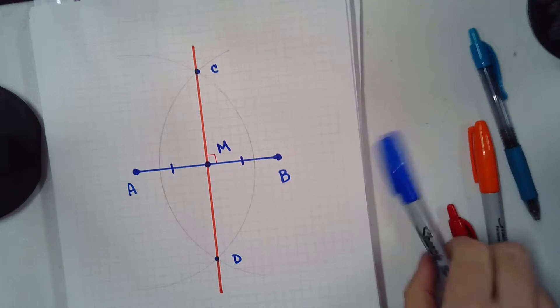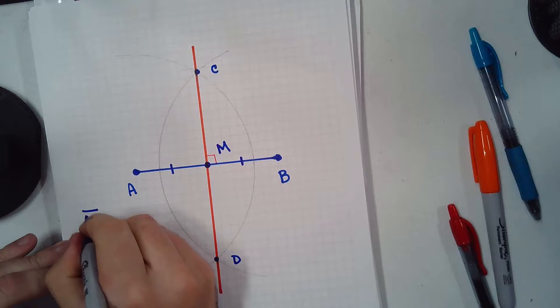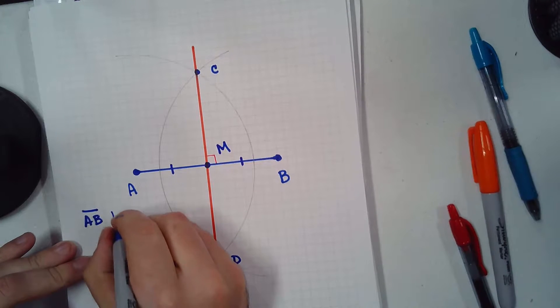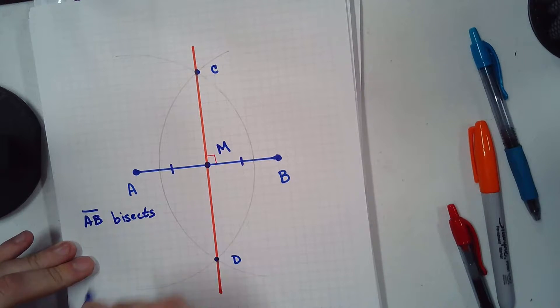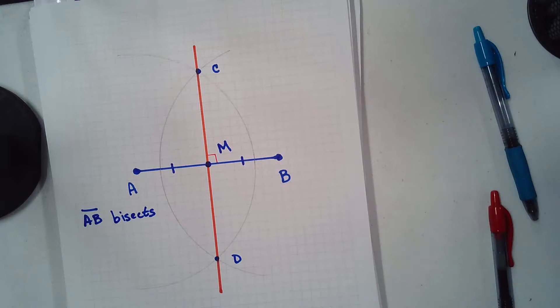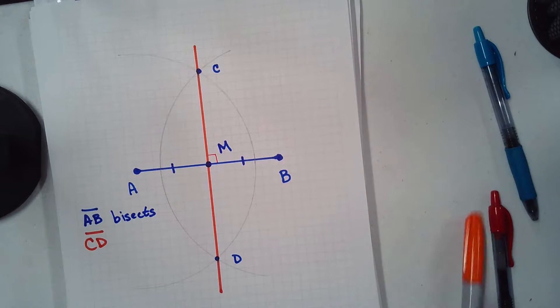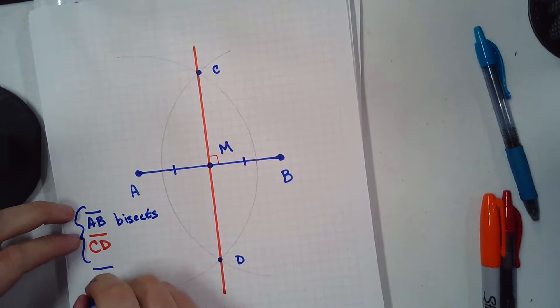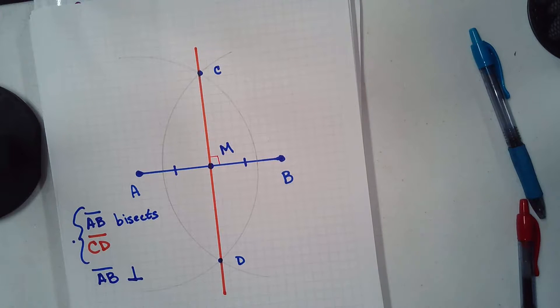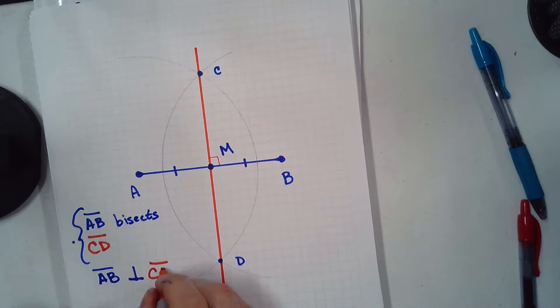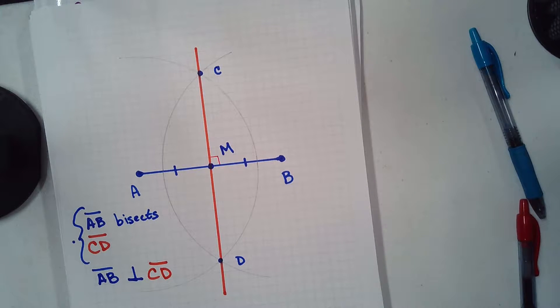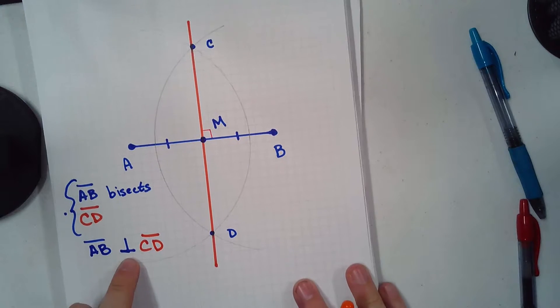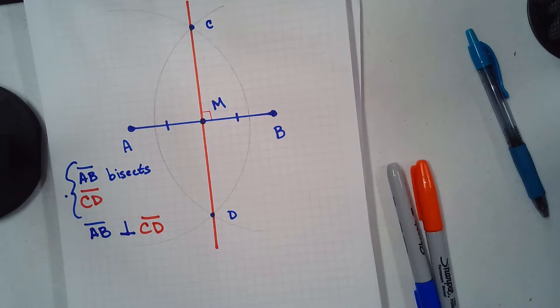So, it hits it at 90. So, not only does AB bisect CD, we do know that to be true. We also know that AB is perpendicular to CD. That's the sign for perpendicular. The idea is that we have a vertical segment and a horizontal segment. It's an upside-down T. And the idea is that, look, they're hitting at 90. That's what perpendicular means. Perpendicular. That's the word.